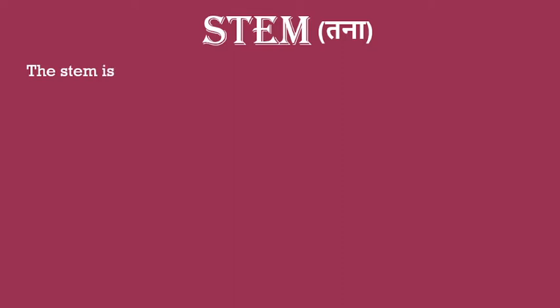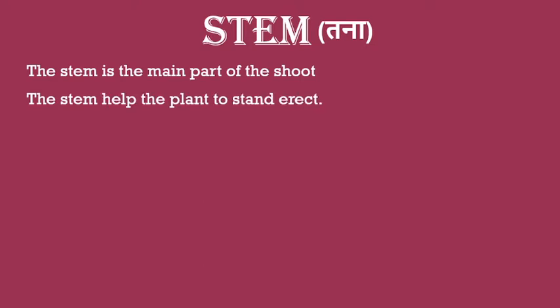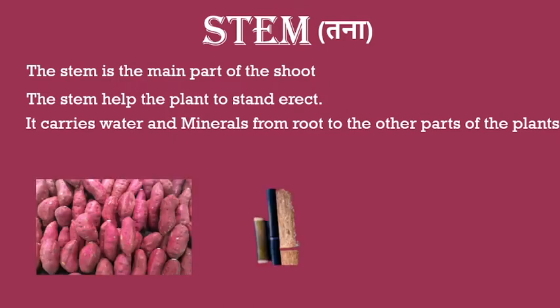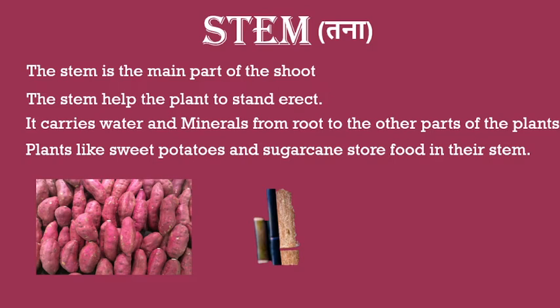Stem — tana. The stem is the main part of the shoot (tana praroha ka mukhya bhag hota hai). The stem helps the plant to stand erect. It carries water and minerals from the root to the other parts of the plant. Plants like sweet potatoes and sugarcane store food in their stem. (Shakarkand aur ganna jaise paudhe apne tanon mein bhojan ko jama karte hain.)